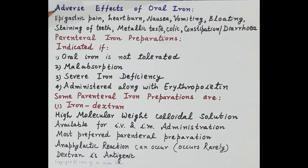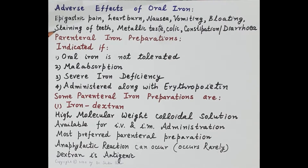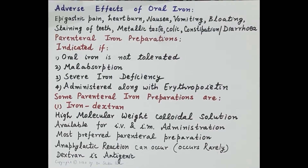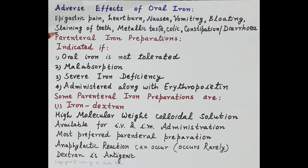The adverse effects of oral iron are dependent on elemental iron content. Common side effects include epigastric pain, heartburn, nausea, vomiting, bloating, and staining of teeth by liquid preparations — hence liquid preparations should be placed at the back of the tongue and swallowed. Other adverse effects include metallic taste, colic, constipation, and diarrhea. Constipation is more common and is caused by alteration of intestinal flora.